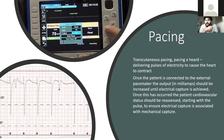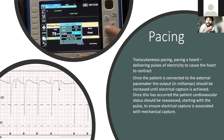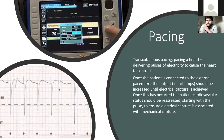The problem with transcutaneous pacing is that it's quite painful for the patient. So you want to give them sedation beforehand. This is why, whilst you're giving your atropine, you should call for senior support — your anaesthetist and registrar — so this can be planned in a controlled manner whilst the cardiologist sorts out the underlying cause and further interventions are planned.